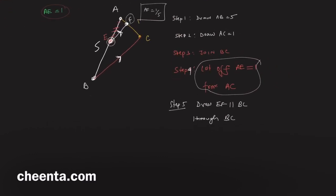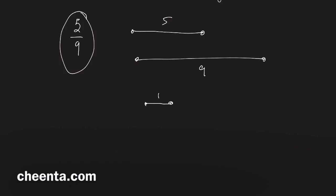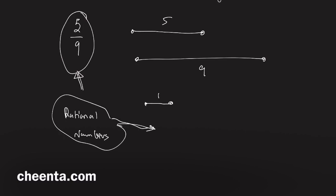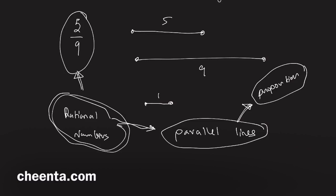You can use this method to construct p over q. For example, if you want to construct five over nine, and you have the length of five, the length of nine, and a length of one, the previous technique can be used to construct the ratio five over nine. This is the central idea of rational numbers — they are deeply connected with the notion of parallel lines, because parallel lines are basically connected with proportion. Think about it in an abstract manner and you will see how beautiful the connection between number theory and geometry is.